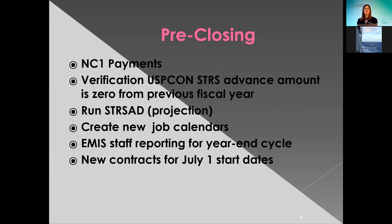What we're going to be going through today is the pre-closing. We're going to go through the NC1 payments, also going over the USPCON STRS advance, and verifying that it's clear before you start the new fiscal year from the previous. Going over the STRS advance and projection. Also, create new job calendars for the upcoming year if they haven't done so already. The MIS staff reporting for the year-end cycle. And also starting to add new contracts for any employees that start with the July 1st start date.